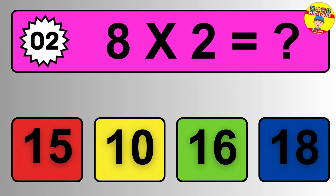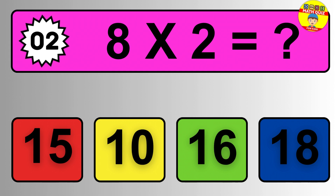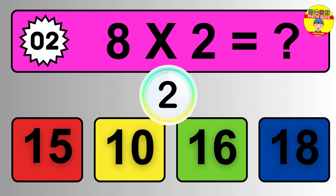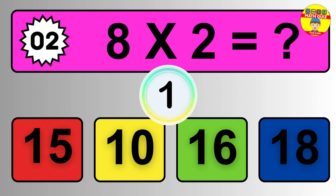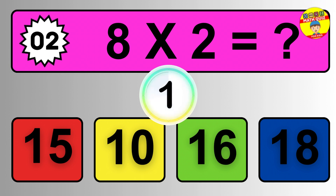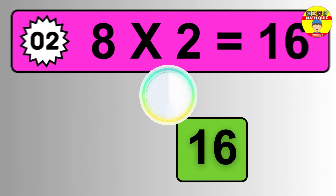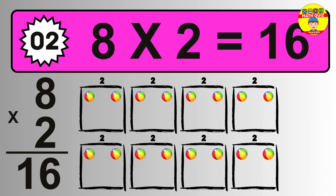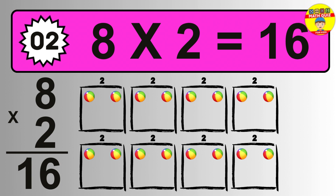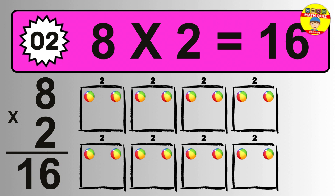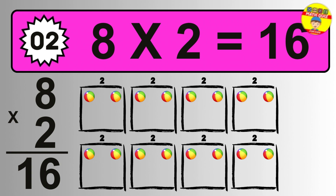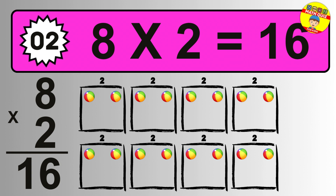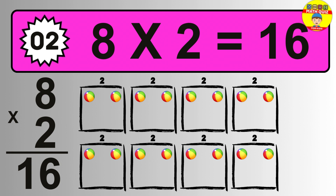Question two: eight times two equals what? The answer is eight times two is sixteen. To calculate, we have eight groups with two balls each. So how many balls do we have? Sixteen balls.